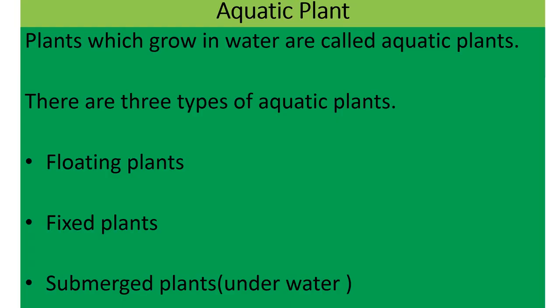Now in today's lecture, we will talk about some other plants — aquatic plants. Plants which grow in water are called aquatic plants. There are three types of aquatic plants: floating plants, fixed plants, and submerged plants or underwater plants.